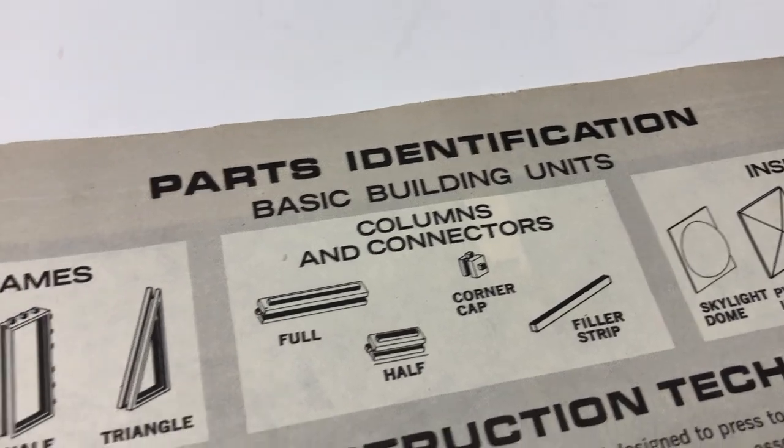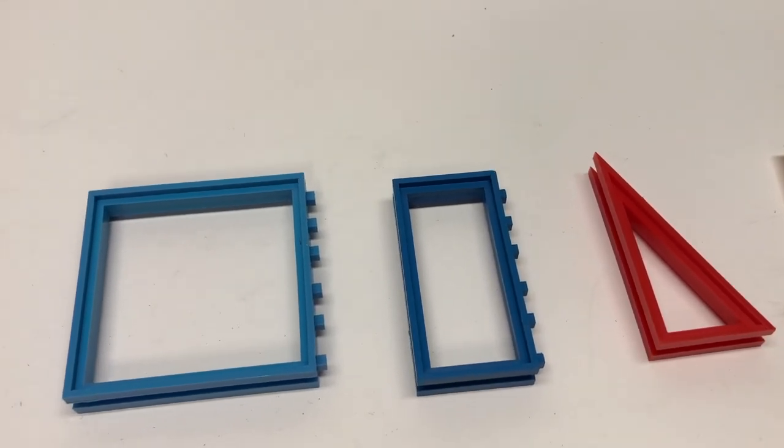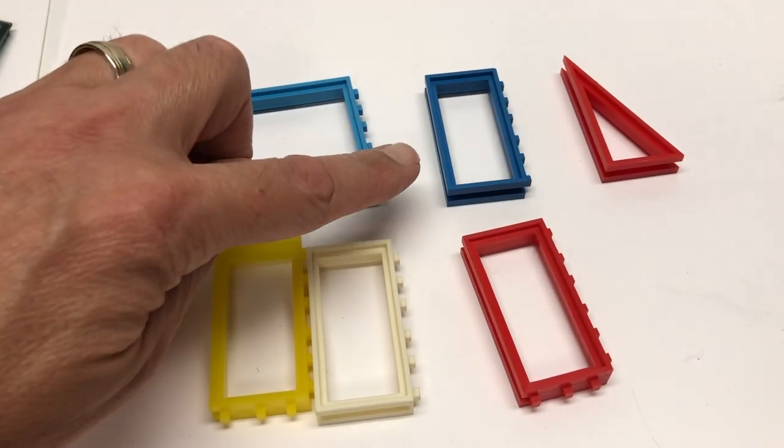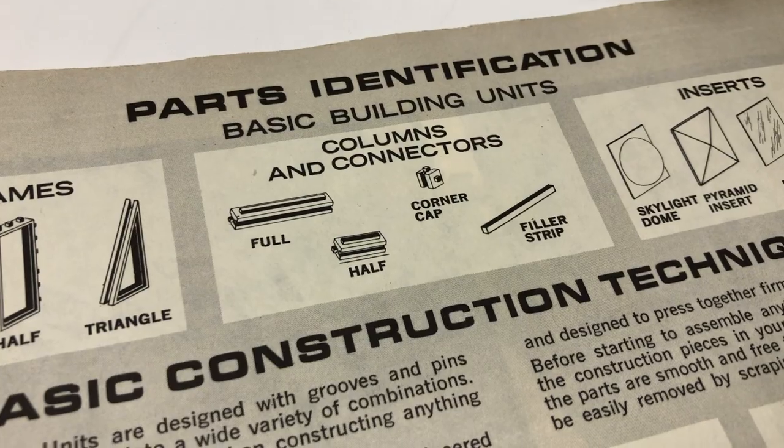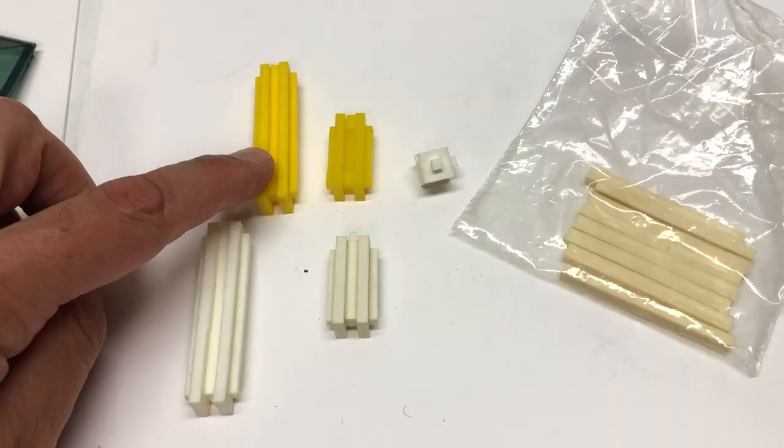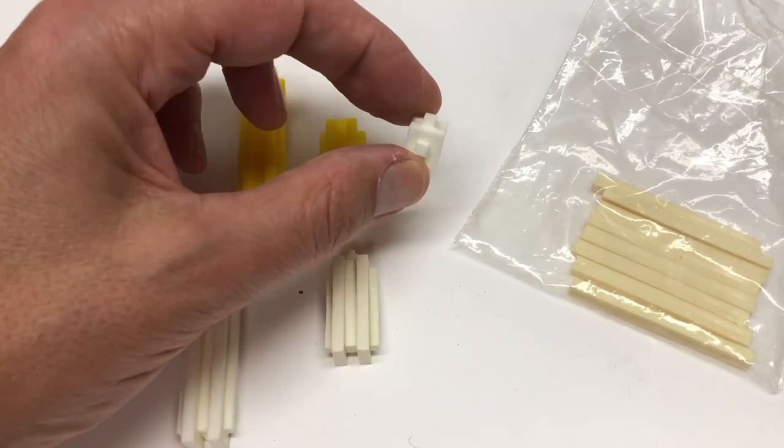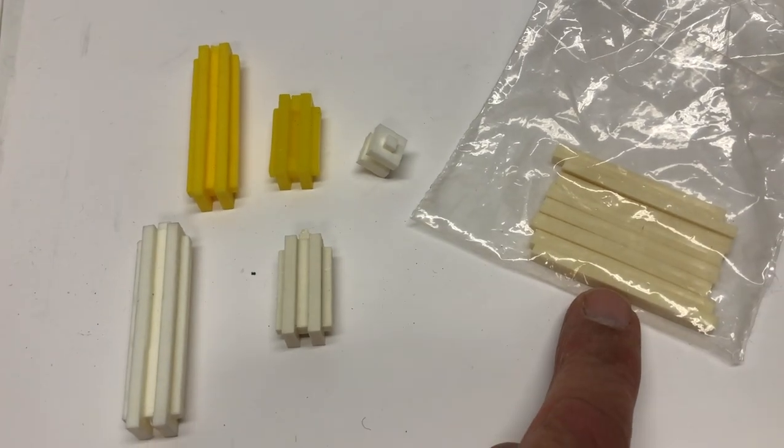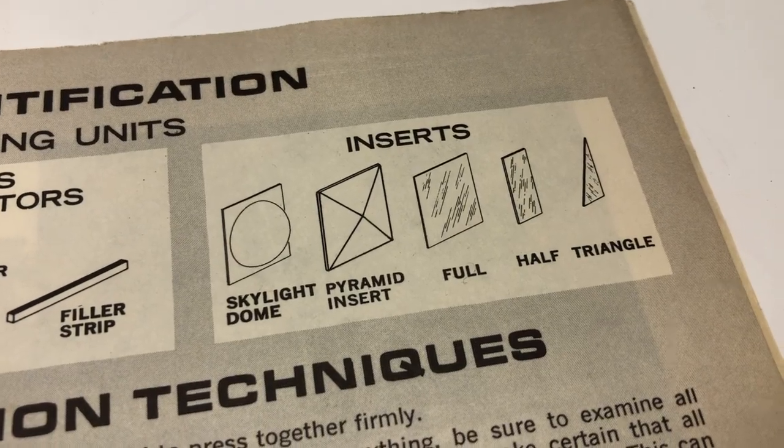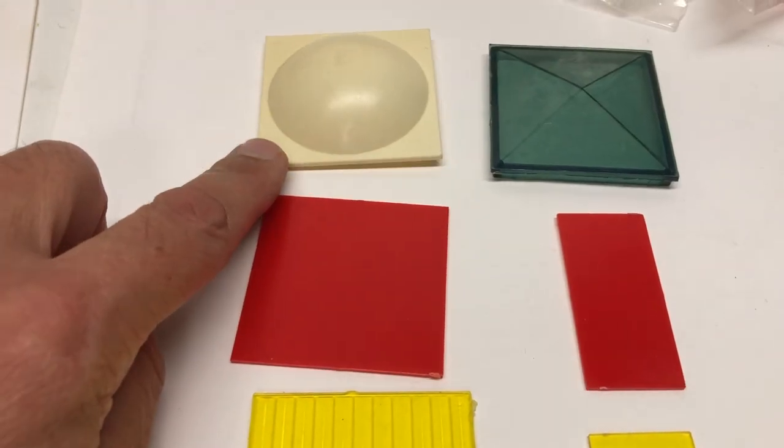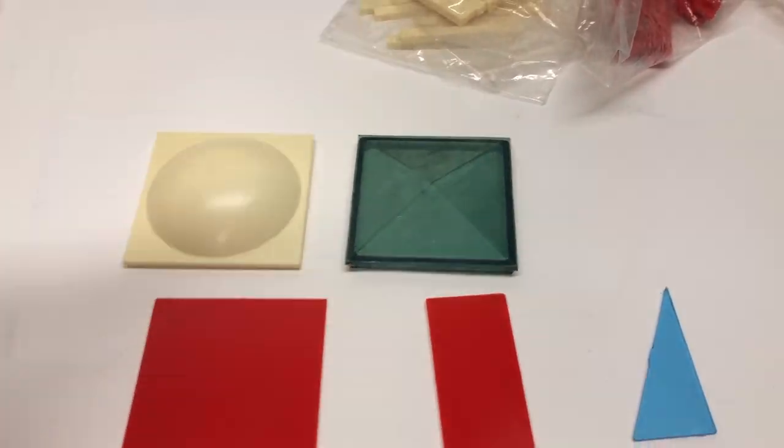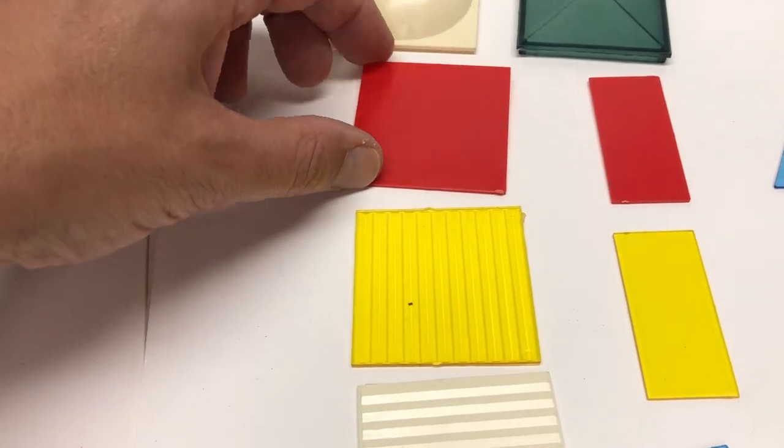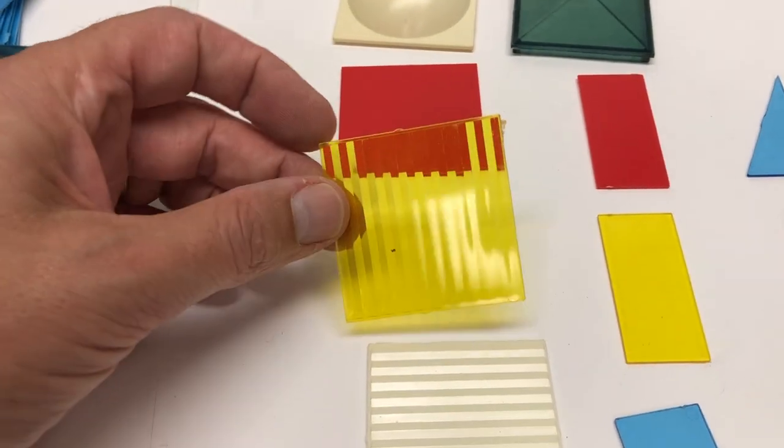We're talking about the basic building units. Three types of frames: full, half, and triangle. They do come in various colors. So you can see I have the half frame in blue, but also red, white, and yellow. They also have columns and connectors: full, a half, and a corner. And these are actually called filler strips. And the last major building unit they have are inserts. There is a skylight dome. There is a pyramid. It's like a skylight. And then they have these full, and some of them are opaque, and some are translucent.